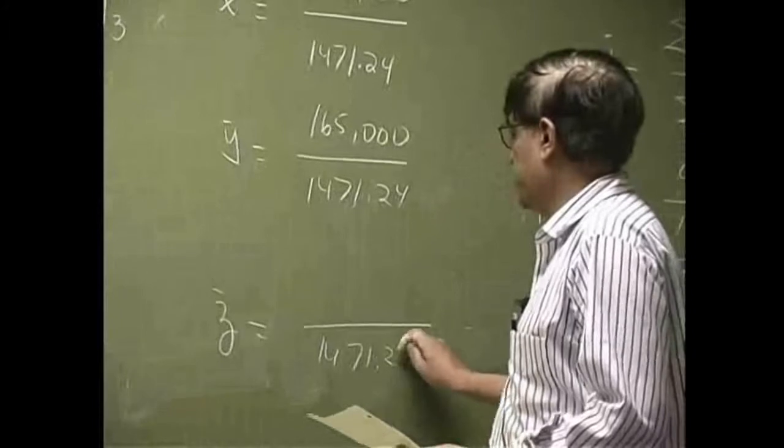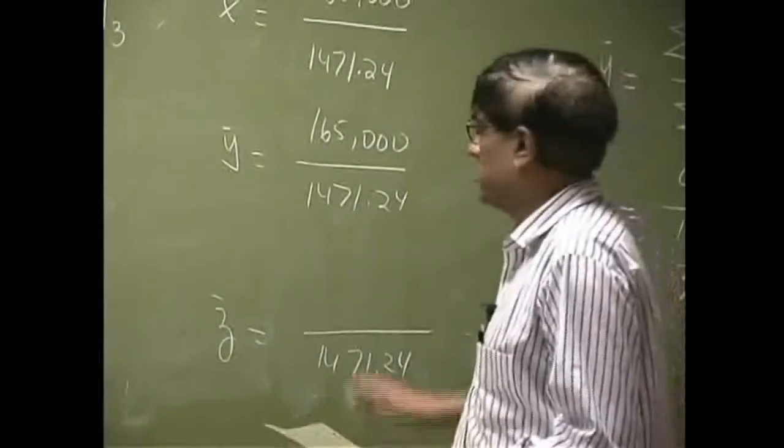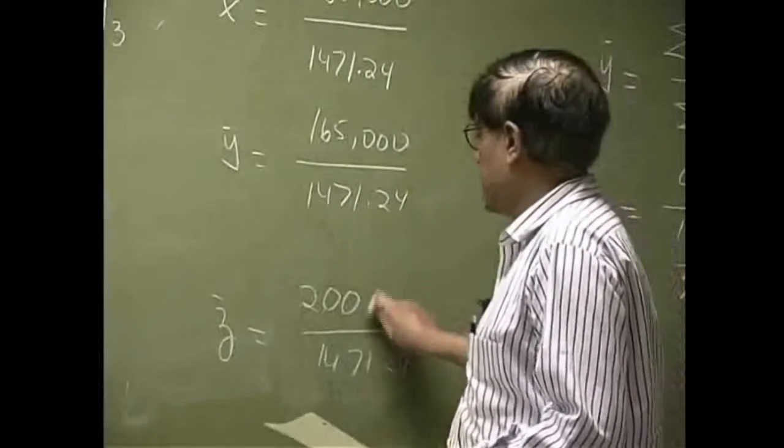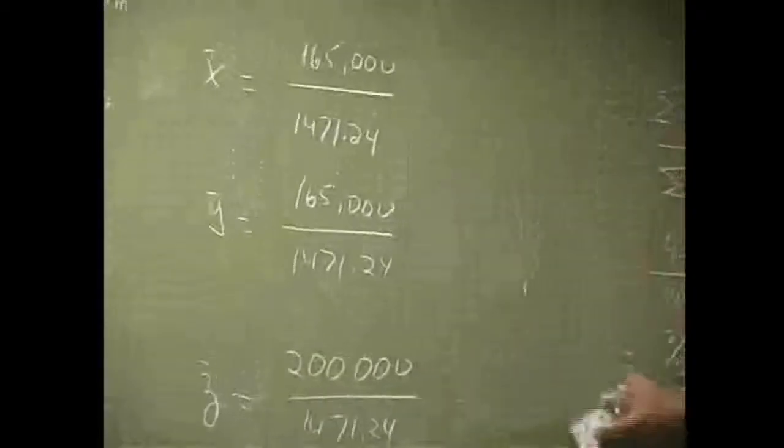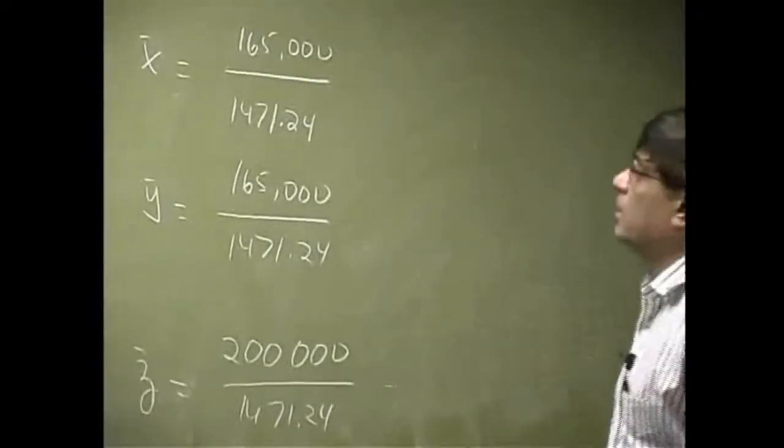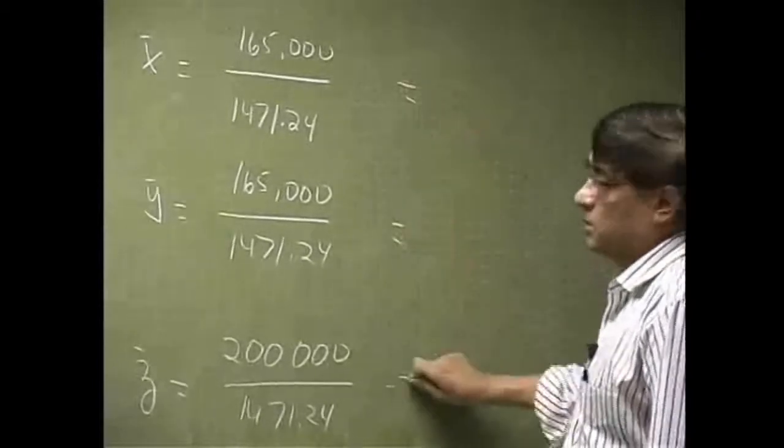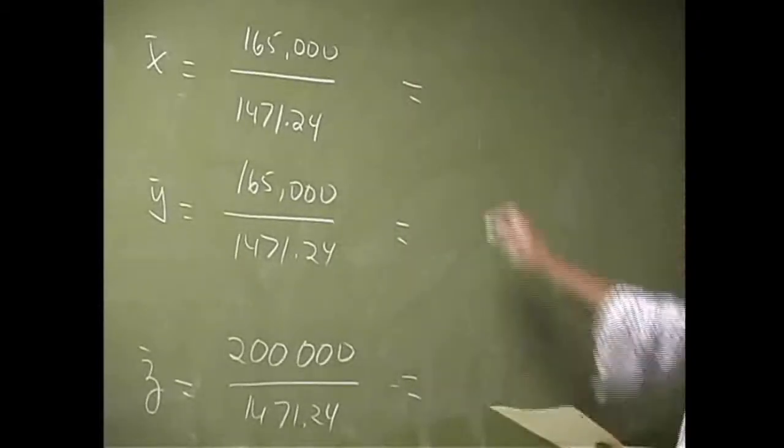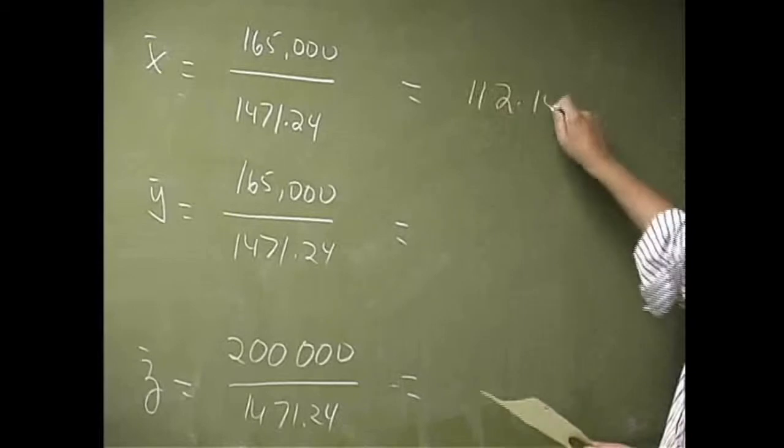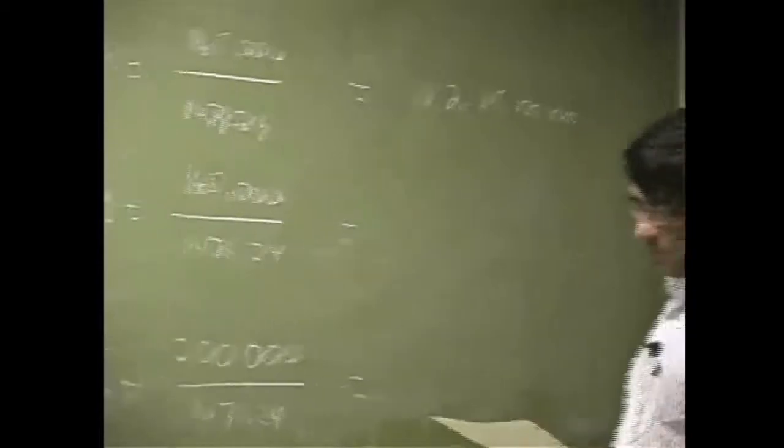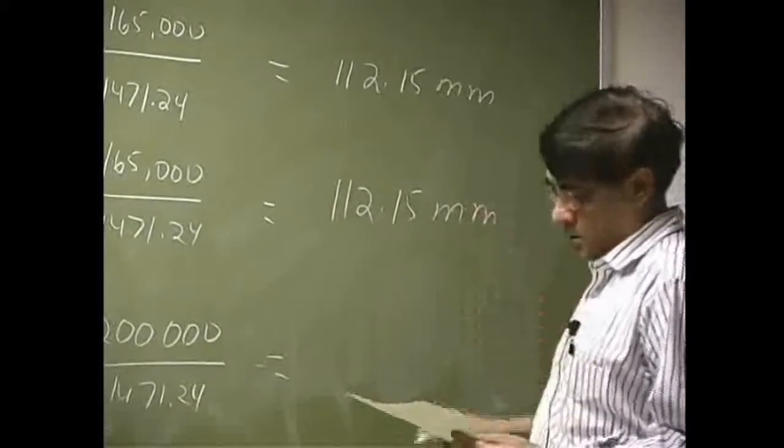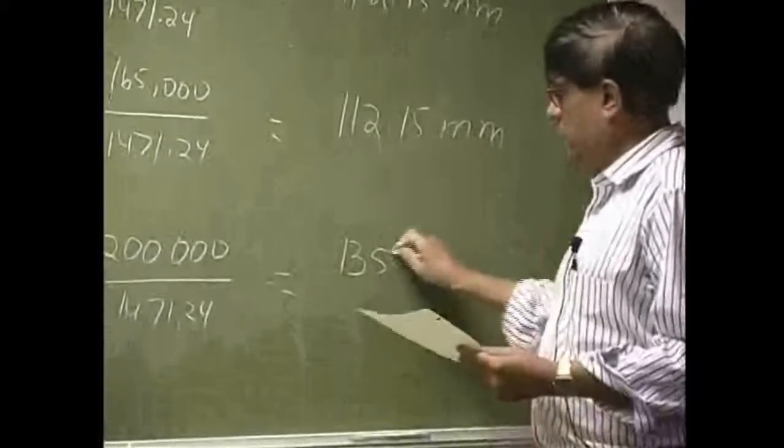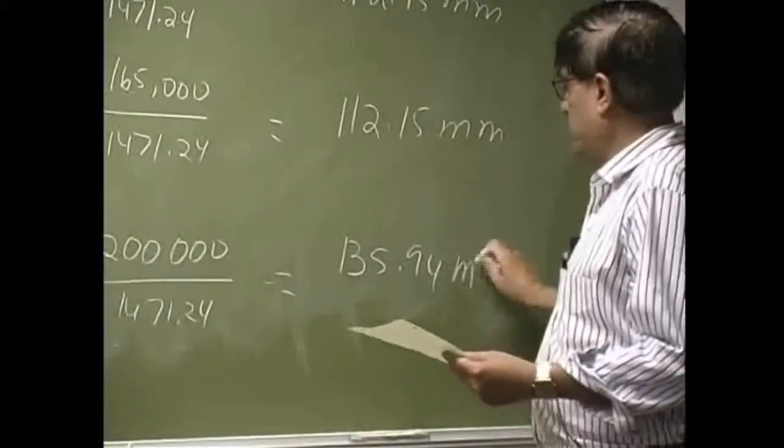Then you get c bar: the same length 471.24, then you have 200,000. And then you just need the actual numbers: 112.15 mm, same number, and the last one is 135.94 millimeters.